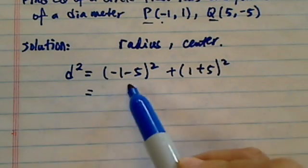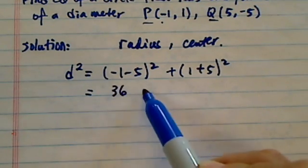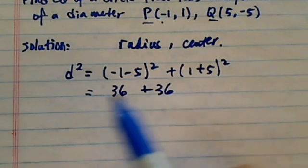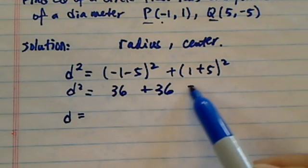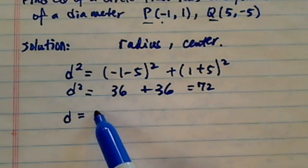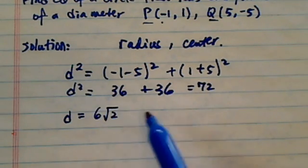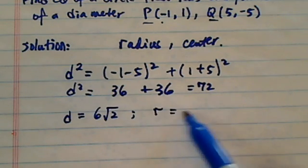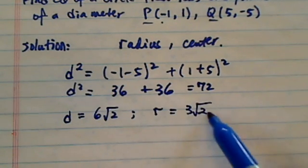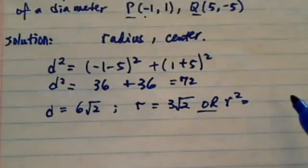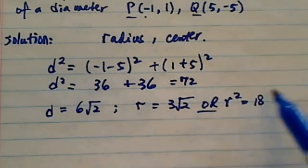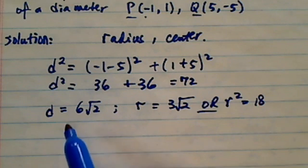So this is 6 here and that's 36 plus 36 there. Distance squared equals 72, so you have 6 radical 2. From there we know radius is 3 radical 2, or what I like to do is convert it to radius squared, which in this case is 18.